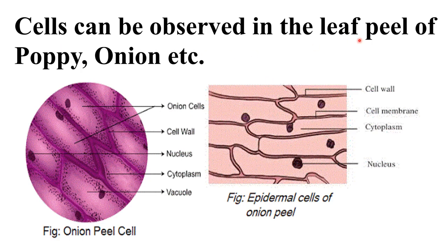Cells can be observed in a leaf peel of a poppy or onion. This poppy activity has also been given to you. You can take out an onion peel and see the onion cell — you can observe the cell wall, nucleus, cytoplasm, and vacuole under a microscope. We will surely do this experiment as soon as school opens.